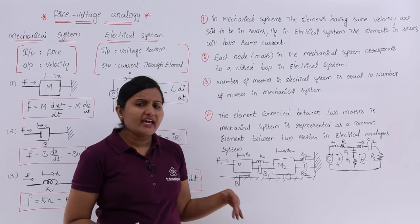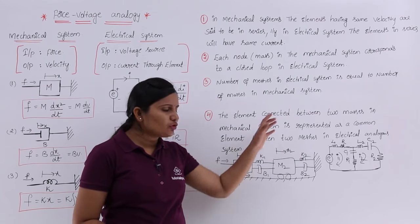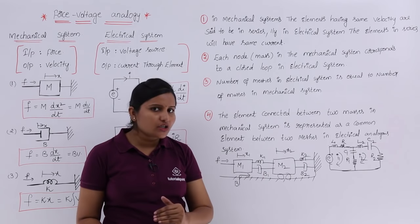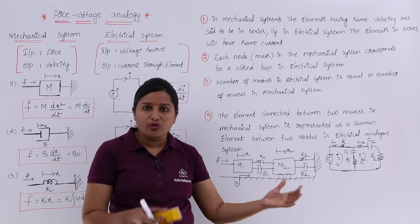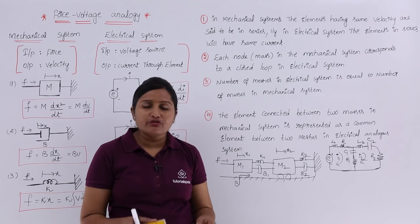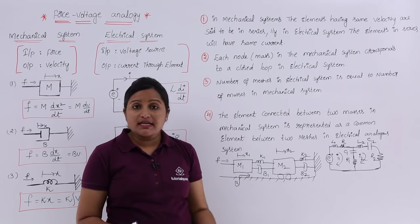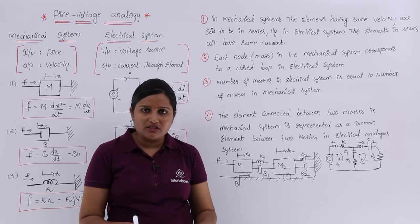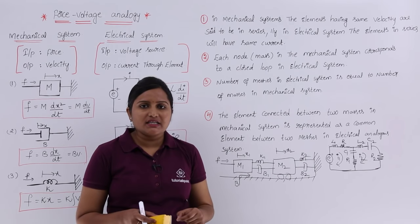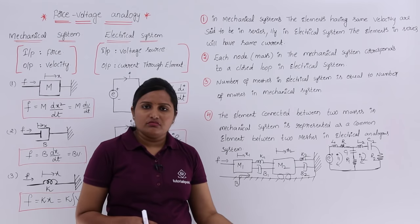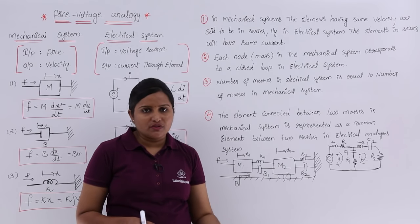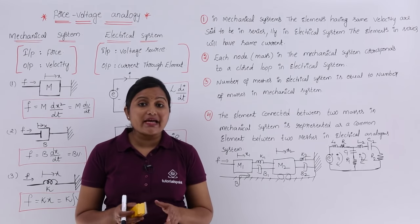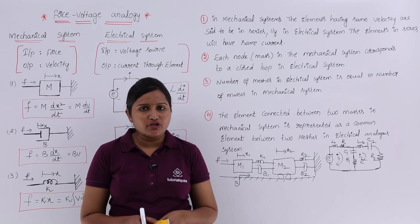There is also a separate systematic process to convert mechanical systems into electrical networks for problems — I will explain that with an example. In the next class, I will complete the force current analogy. After covering both force voltage and force current analogies, I will give a problem to convert into an electrical network using both methods. This concludes force voltage analogy for converting a mechanical translational system into an electrical system.